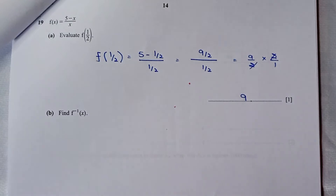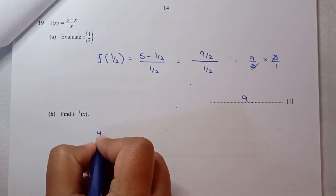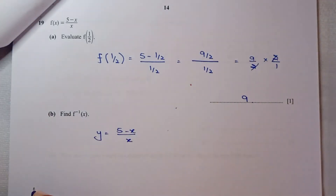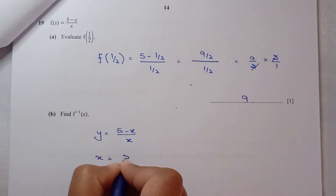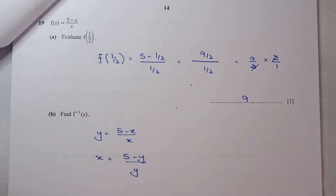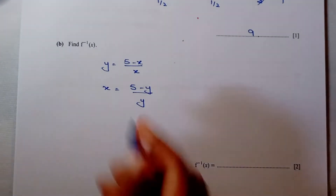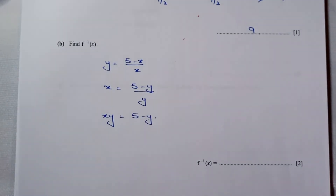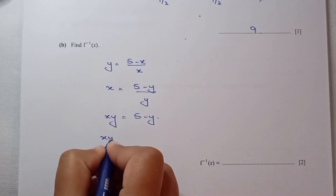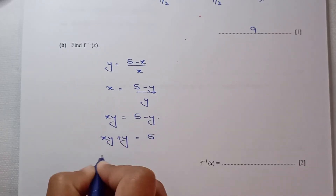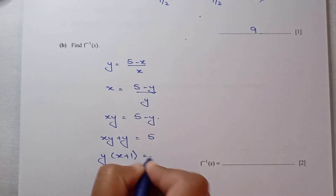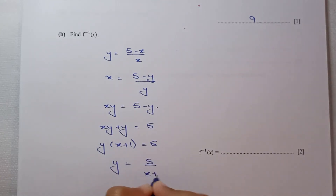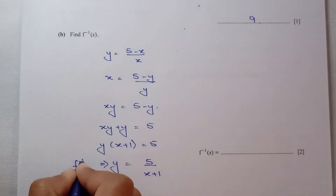For part B, find f inverse of x. Setting y equals f(x), then swapping x and y and solving for y: cross-multiplying gives xy equals 5 minus y. Bringing y terms to the left: xy plus y equals 5, so y(x plus 1) equals 5, giving f inverse(x) equals 5 over (x plus 1).